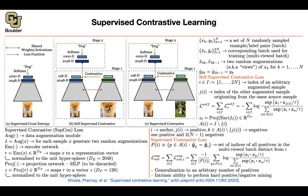Supervised contrastive learning gives much better performance and more transferable features compared to using supervised learning only. As we saw in part one of the course, you take the features coming out of your network, change the head, and you can do object detection or semantic segmentation. It's important to have generalizable, transferable features.